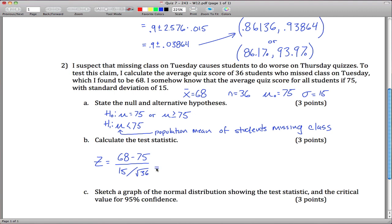So 68 minus 75 gives us negative 7, and you divide that by 15 divided by the square root of 36. 15 sixths is 2.5, and plug that into a calculator. What I get is negative 2.80, my z-score, my test statistic.